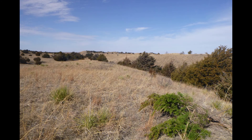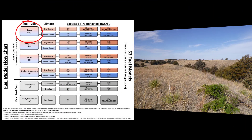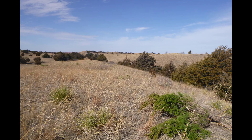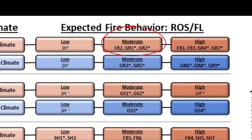Let's start with this example of a grassland in Nebraska. There are a few shrubs, but the area is dominated by grass, which is the primary fire carrier. This is a dry climate, so we want to look at fuels with low moistures of extinction, or dry climate fuels. How much grass is in this grassland? Is it sparse or dense? Short or tall? What do you think the fire behavior would be—low, moderate, or high? In my experience, I feel this grassland would exhibit moderate fire behavior. This leads us to FB2, GR1, or GR2.